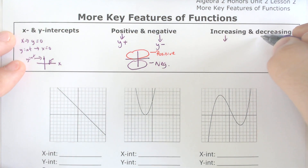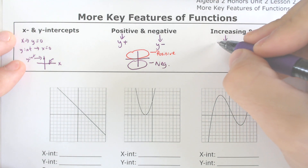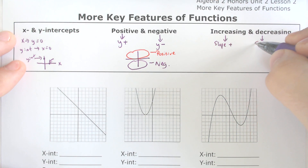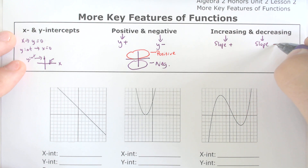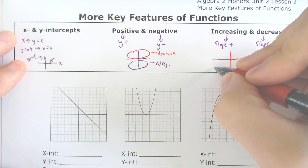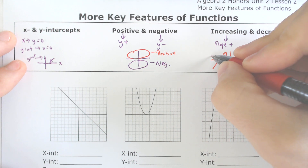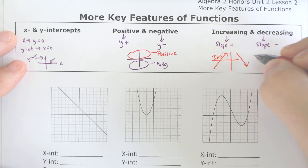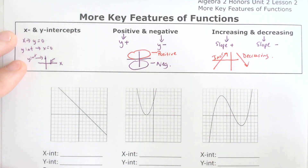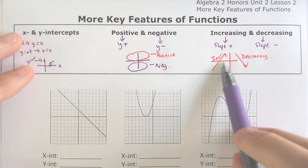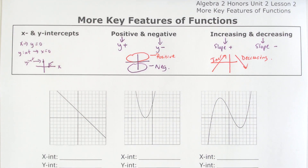Increasing and decreasing refers to the slope. If the slope is positive, we are increasing; if the slope is negative, we are decreasing. You could also think of it as: when are you going up the mountain? That would be increasing. When are you going down the mountain? That would be decreasing. It does not matter what the y values are for this.